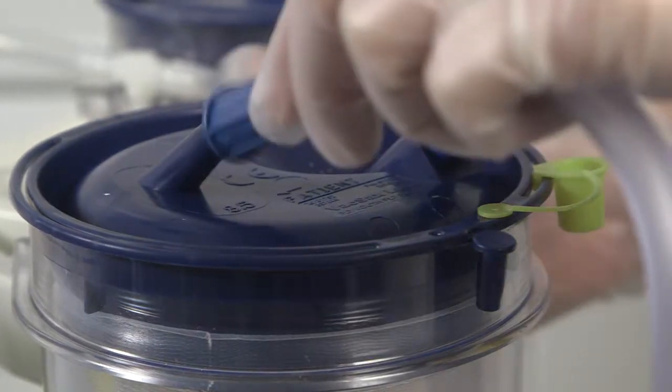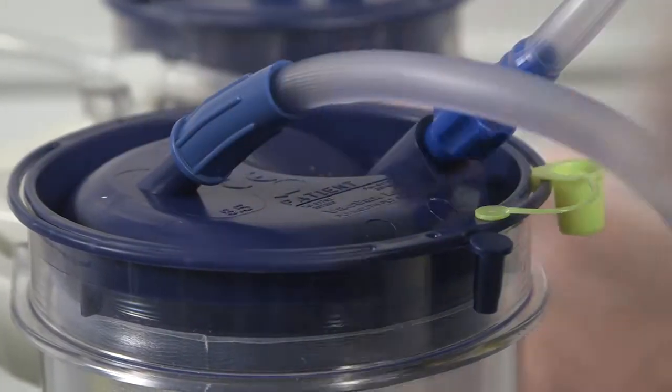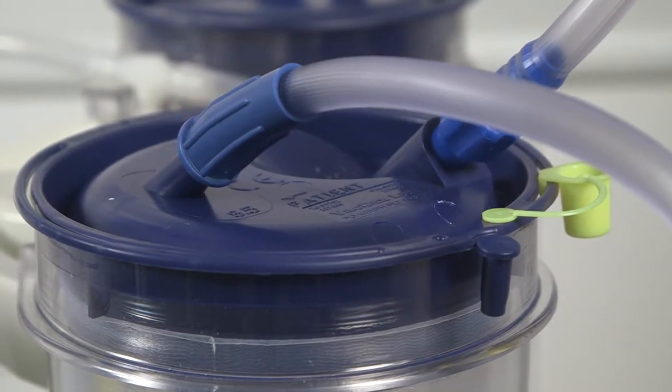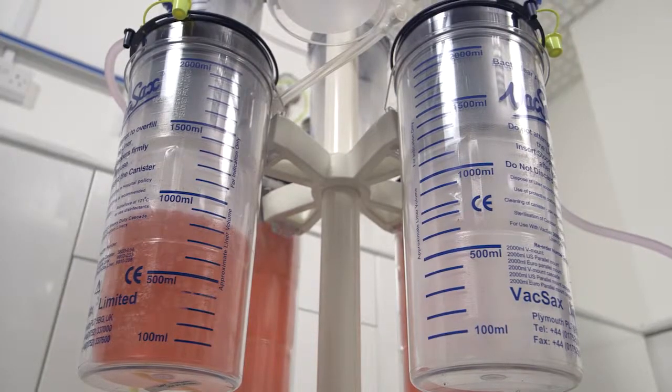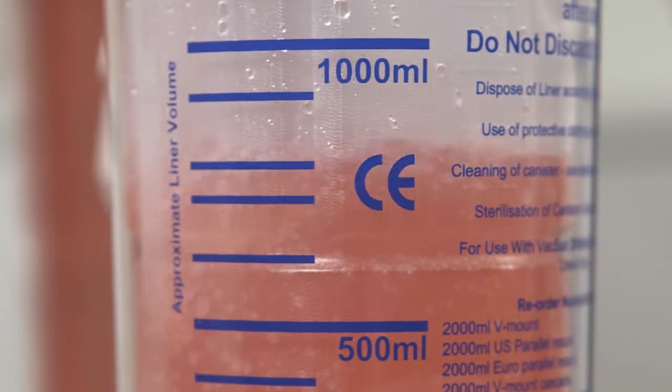Now connect the patient tubing to the first blue cascade liner mounted on the bottom row. The system is now ready for use and will commence to fill and cascade.